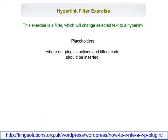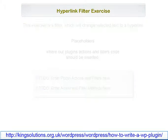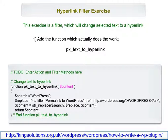In our plugin template class, we left placeholders where our plugin's actions and filters could be inserted. So using these placeholders, let's jump straight in and create a simple WordPress filter to demonstrate how easily plugins can be written. In this exercise we'll change all occurrences of the word WordPress into a capitalized hyperlink in all displayed posts. To do this, the first thing we'll need is a function which will actually do the work. We'll call this function PKTextToHyperlink.